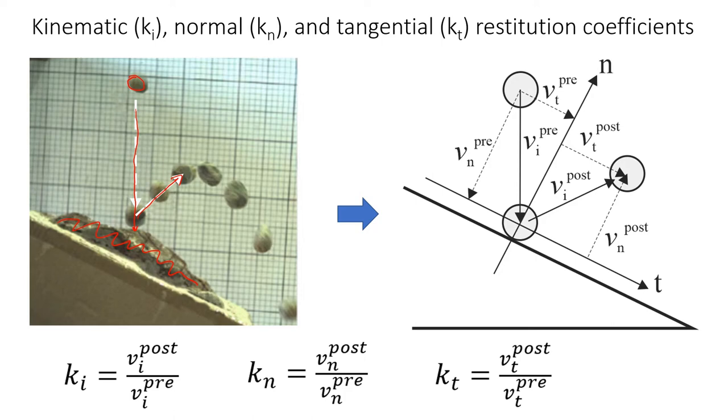We need to measure the velocity of the rock before it hits, so this is going to be pre, and after it hits the surface, so this is post. That's why we need the high-speed camera, because the experiment is very quick.